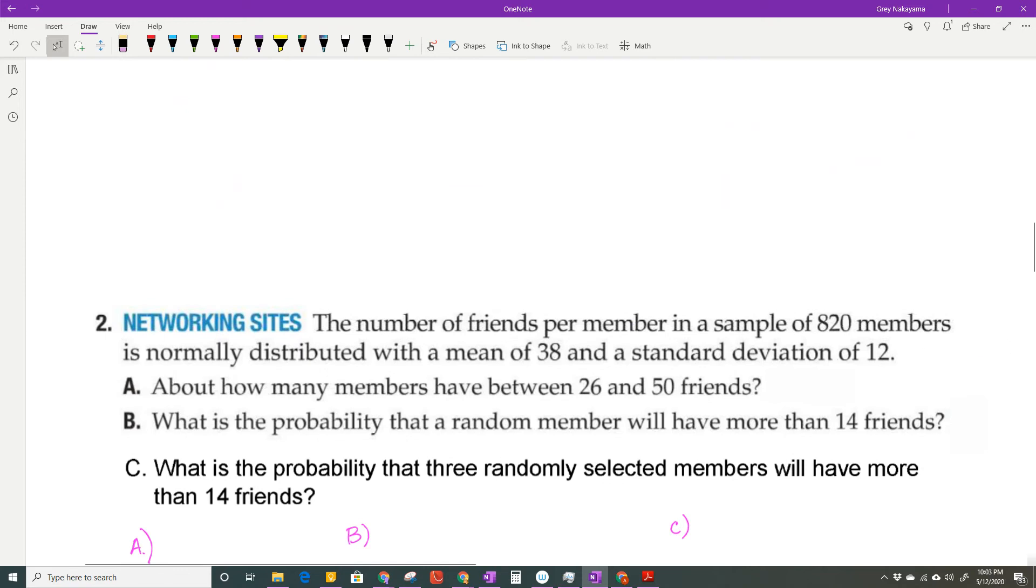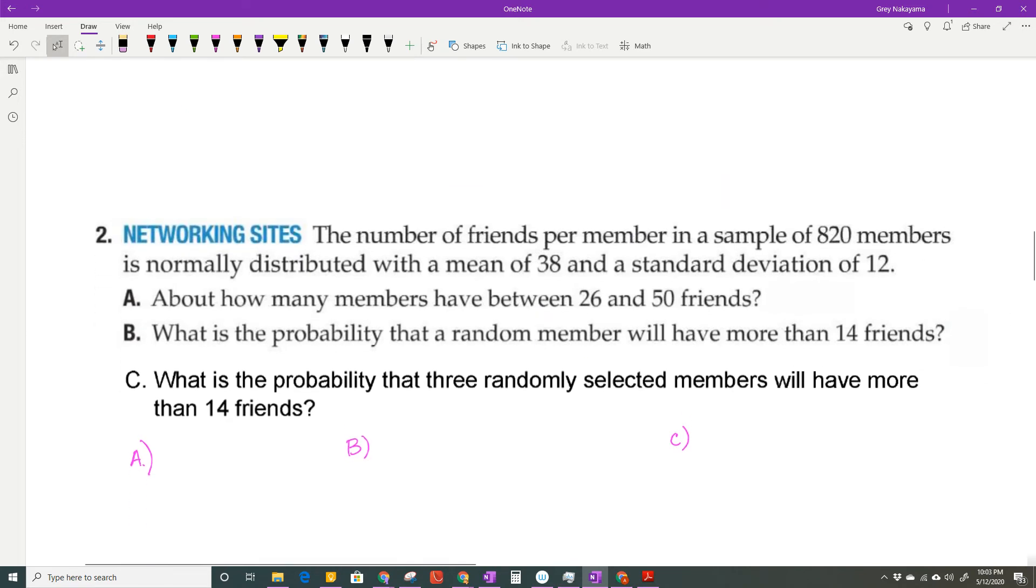Let's look at a few more problems. We have networking sites. So the number of friends per member in a sample of 820 members is normally distributed with a mean of 38 and a standard deviation of 12. So you know me. I'm going to go ahead and put my little chart up here. What is my mean? A mean of 38 and a standard deviation of 12, which means I know all of these other numbers. So 38 plus 12 plus 12 plus 12 minus 12 minus 12 minus 12. So I kind of know where everything falls.